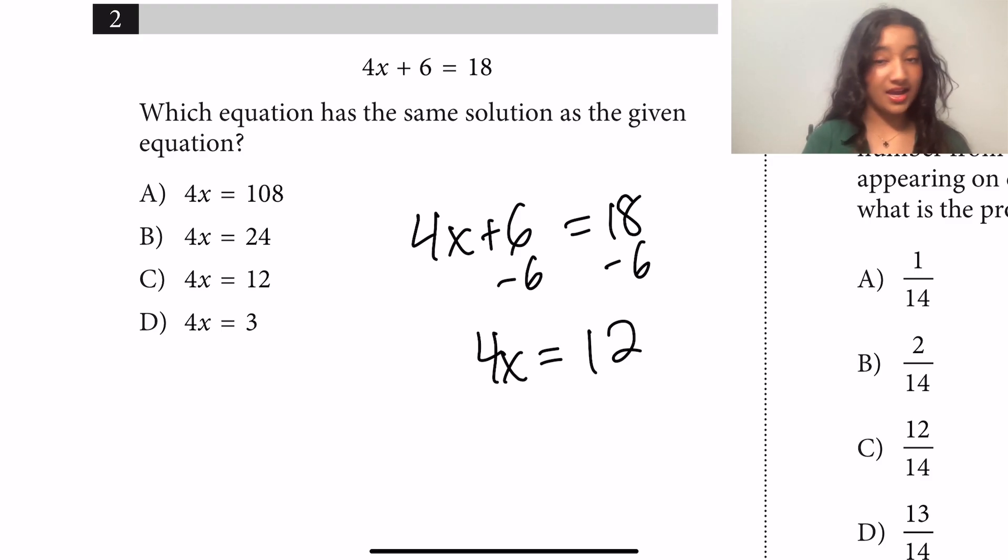But before we fully simplify down to what x equals, we can look at the answer choices and see that it's asking what 4x equals. So 4x equals 12 gets us answer C.